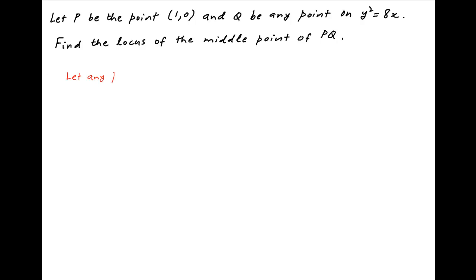We start by determining a general point on the parabola y square is equal to 8x. If we let x is equal to 2t square, then y square is equal to 16t square and therefore y is equal to root of 16t square which is equal to 4t.